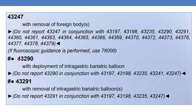The next CPT is a new code, out of numerical sequence: 43290. It deals with esophagogastroduodenoscopy, flexible, transoral, with deployment of intragastric bariatric balloon. Do not report 43290 in conjunction with 43197, 43198, 43235, 43241, or 43247. The next new code is 43291: esophagogastroduodenoscopy, flexible, transoral, with removal of intragastric bariatric balloon — previously it was deployment, now it is removal. Do not report 43291 in conjunction with 43197, 43198, 43235, or 43247.